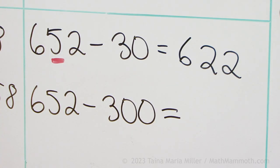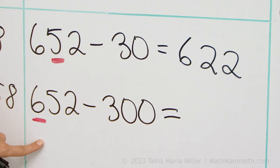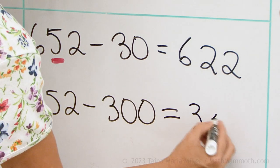652 minus 300, now we are going to subtract 3 whole hundreds. So you concentrate on the hundreds digit, 600 minus 300. That's 300, right? And then these don't change. 352.